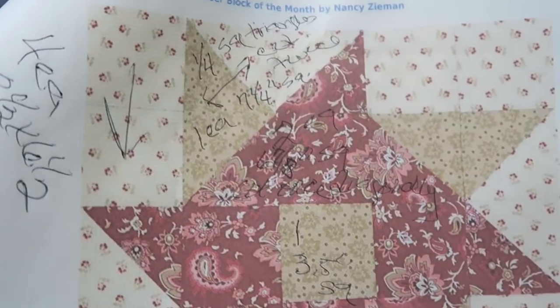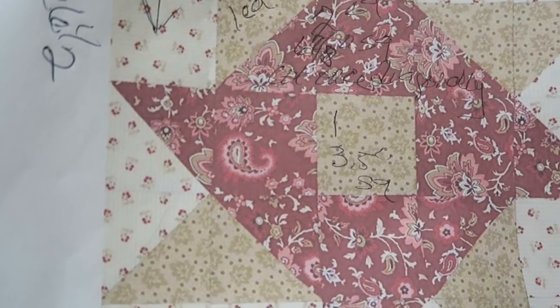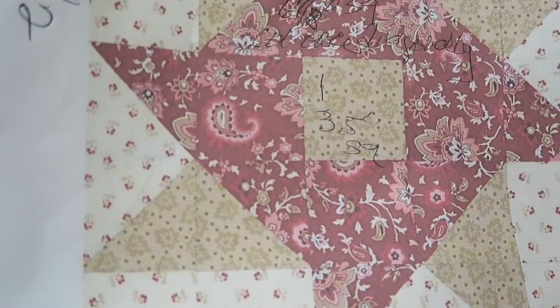So I'm cutting two squares that are six and seven eighths and I'm cutting them once diagonally.